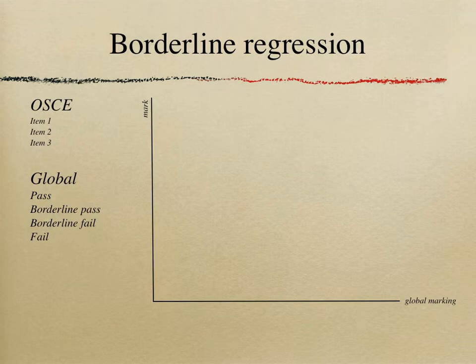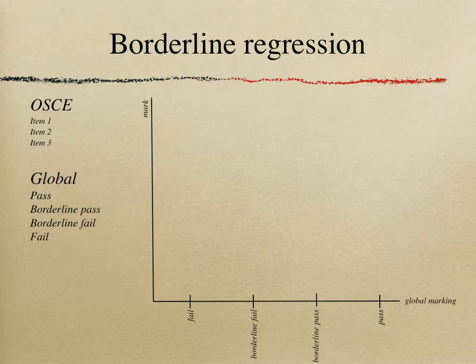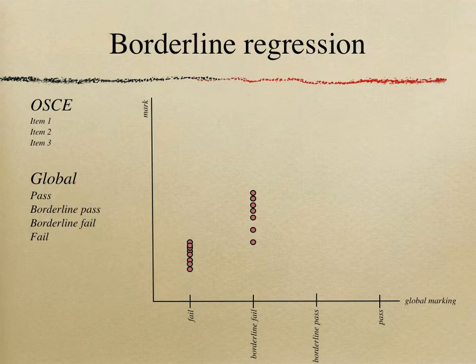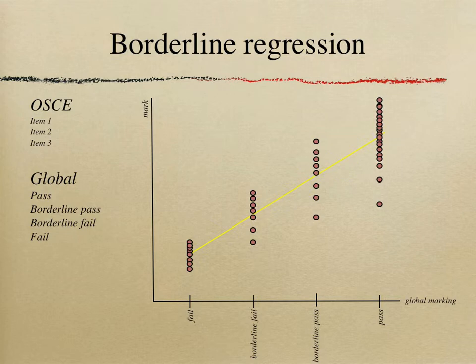Using four categories — as we would use in Manchester — you plot fail, borderline fail, borderline pass, and pass global markings on your graph. You plot all the marks given to candidates who failed the station, all the borderline fail marks, all the borderline pass marks, and all the pass marks, then simply draw a regression line through these four categories. Wherever the borderline fail category corresponds to on the y-axis is your pass score for that given OSCE station.